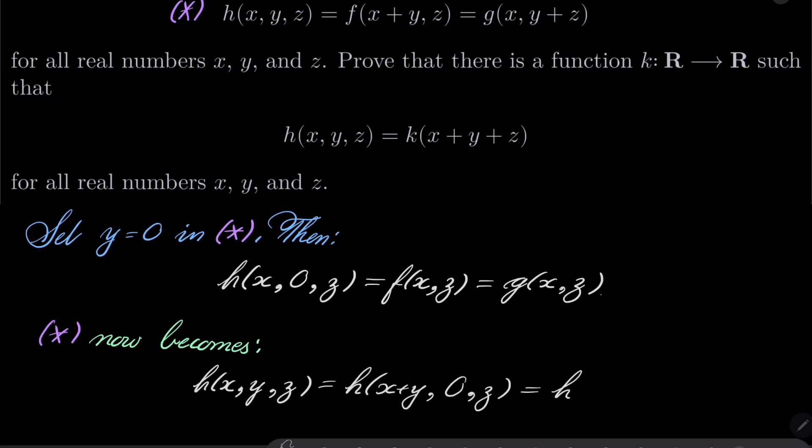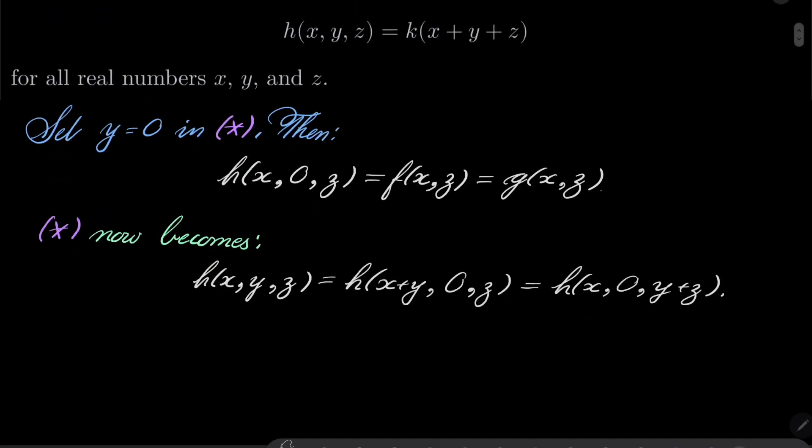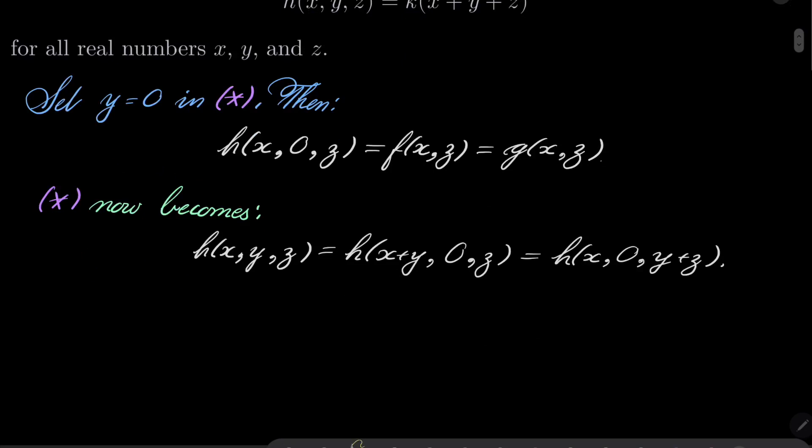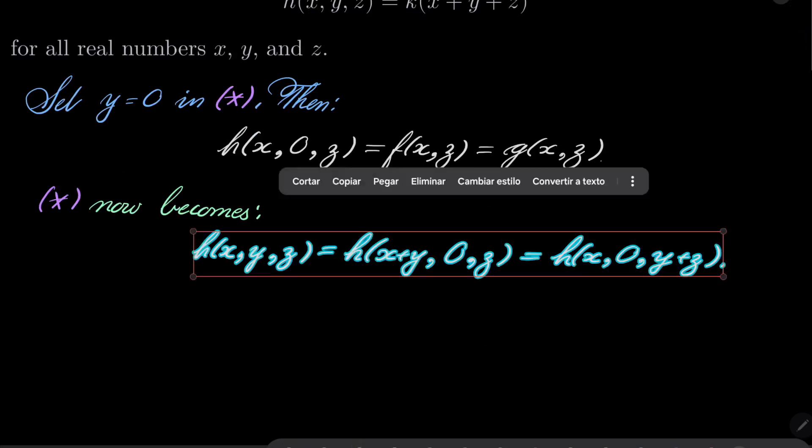Which also equals, instead of g(x,y+z), we can write h(x,0,y+z). And let's call this condition double asterisk.